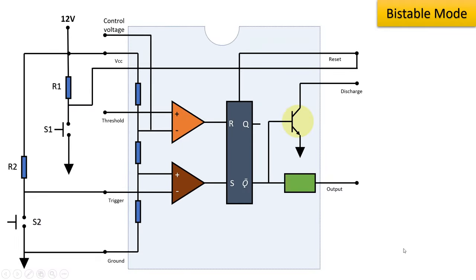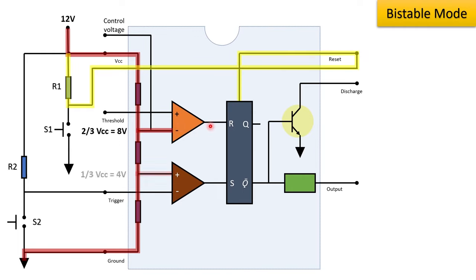The next is bistable mode of operation. It can be used as a storage device, latch, counter, frequency divider, and more. Here is the circuit of the bistable multivibrator where R1 and R2 resistances and switches S1 and S2 are connected. Initially both comparators are at 0 output and the flip-flop is at 0 and 1 condition, resulting in 0 output of IC555.